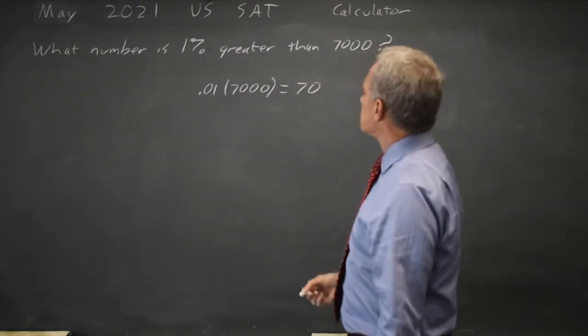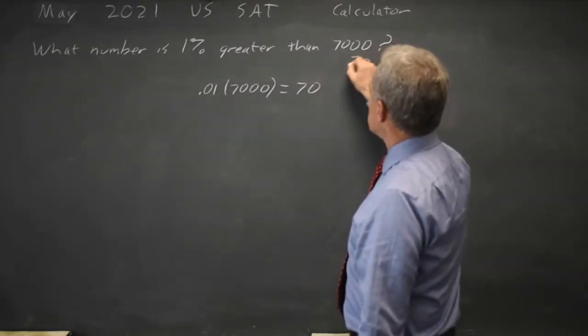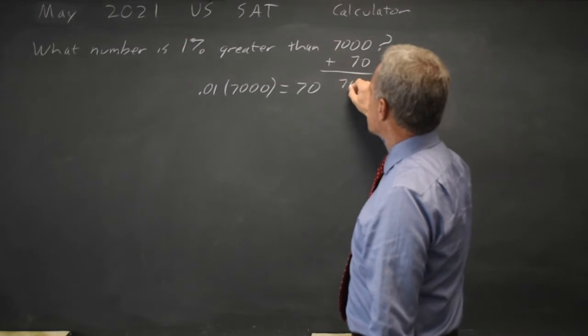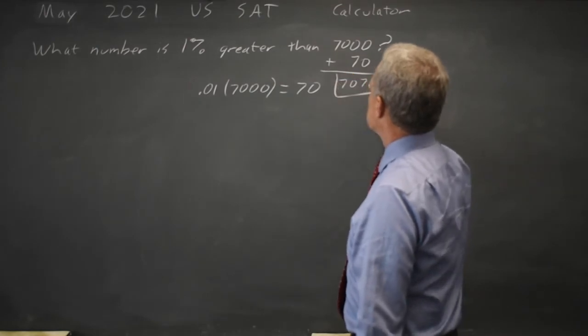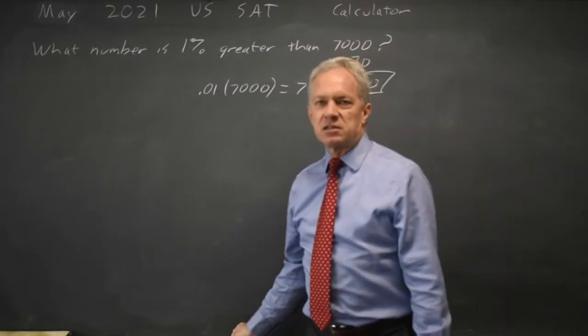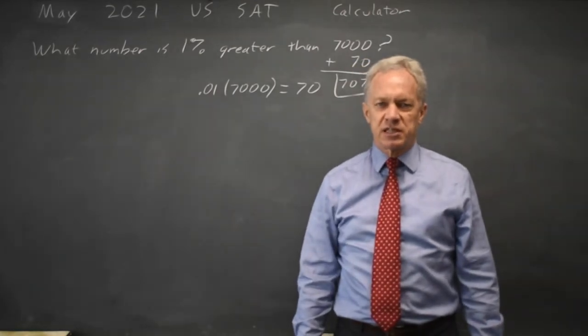And we want a number that's 1% greater. 70 greater means add 70 to your number, and that's 7,070. 7,070 is a number 1% greater than 7,000.